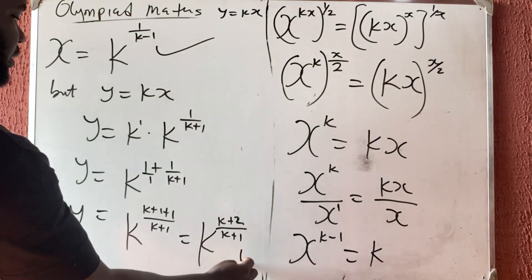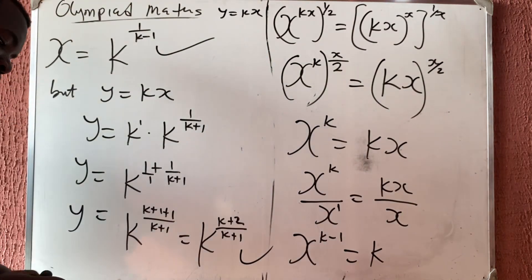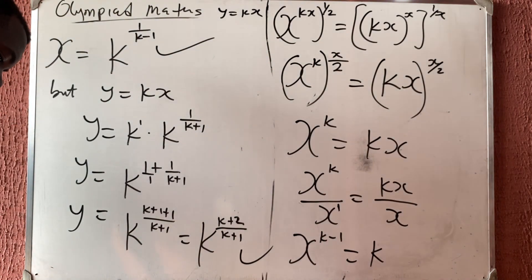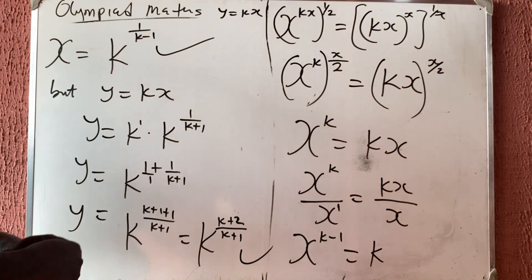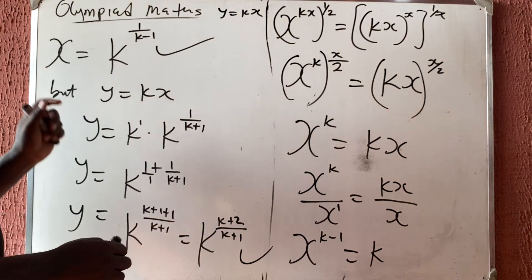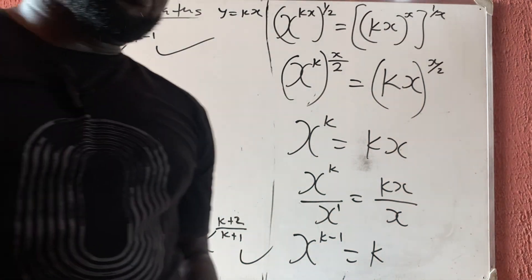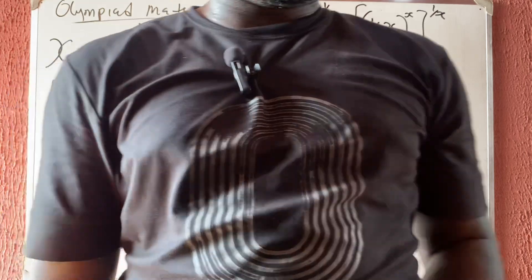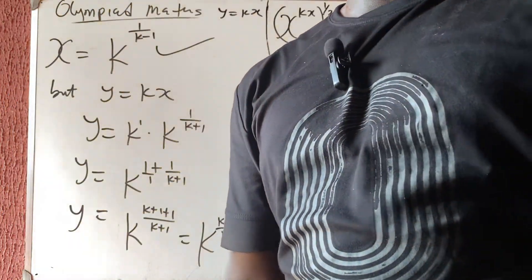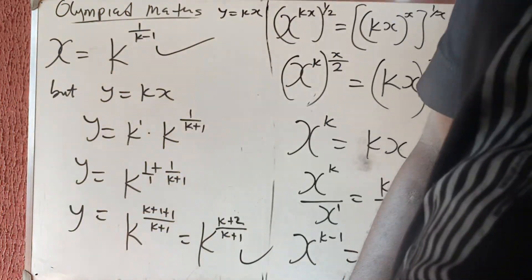So that is the value of x and y. This is x and this is y. k is any constant — put it 1, put it 2, put it 3, you will still get valid solutions. Thank you very much for watching, please don't forget to subscribe. Bye!